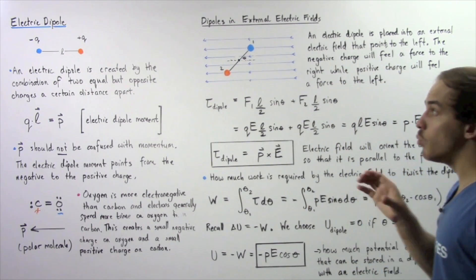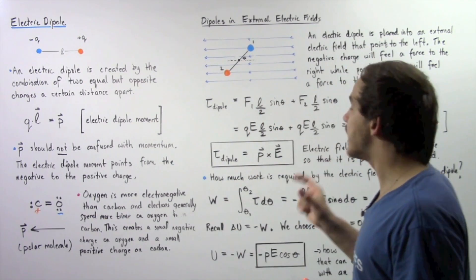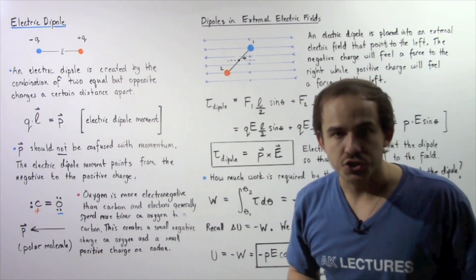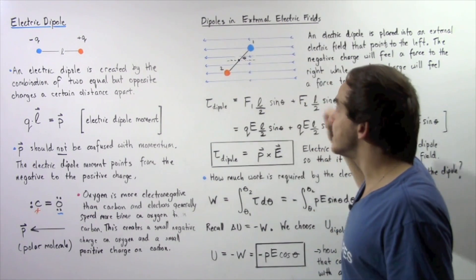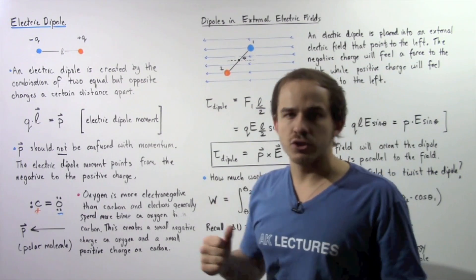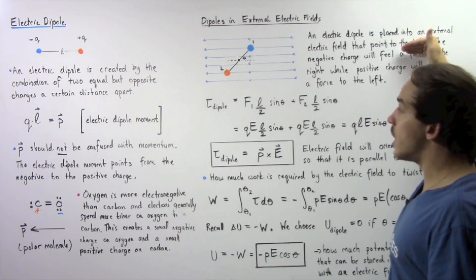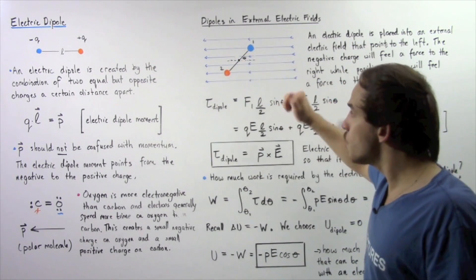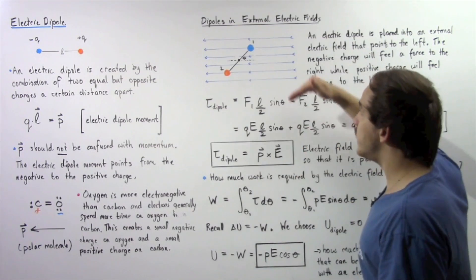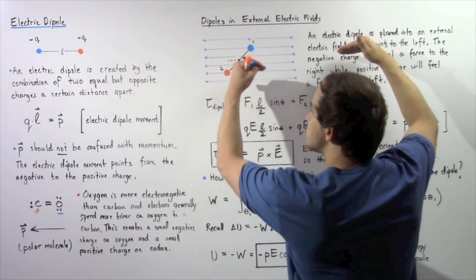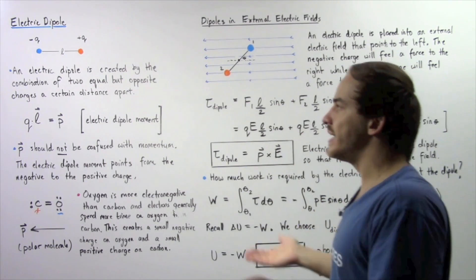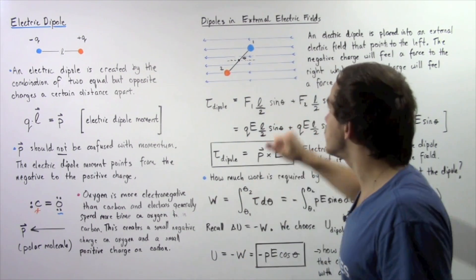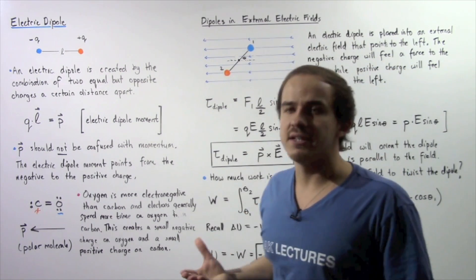When we place our electric dipole into the electric field, the field creates a force on each point charge. The force on the negative charge points opposite to the electric field, while the force on the positive charge points in the same direction as the field. These two forces are equal and opposite, so the net force on our electric dipole is zero — because both charges have the same quantity of charge.